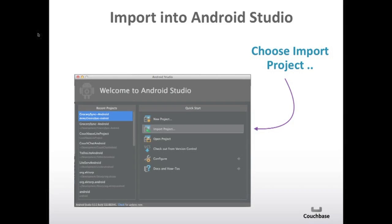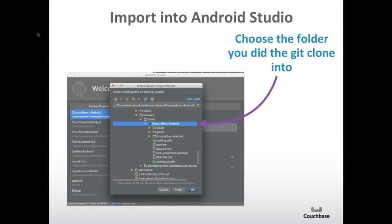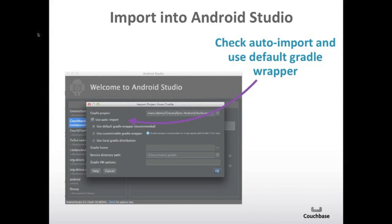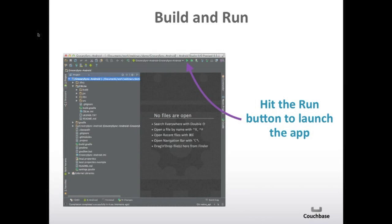If you're not familiar with Android Studio, when you launch it you'll have a welcome screen, and what you'll want to do is import the project. That will prompt you for which directory you want to import, and you'll want to navigate to the Grocery Sync Android folder that you cloned in the previous step. Then it will ask you if you want to auto-import, which won't be checked, so you'll need to make sure to check that. And then leave 'Use Default Gradle Wrapper' as checked. Once you do that, you should end up with a screen that has a tree on the left containing the Grocery Sync Android code as well as the CB Lite library code.